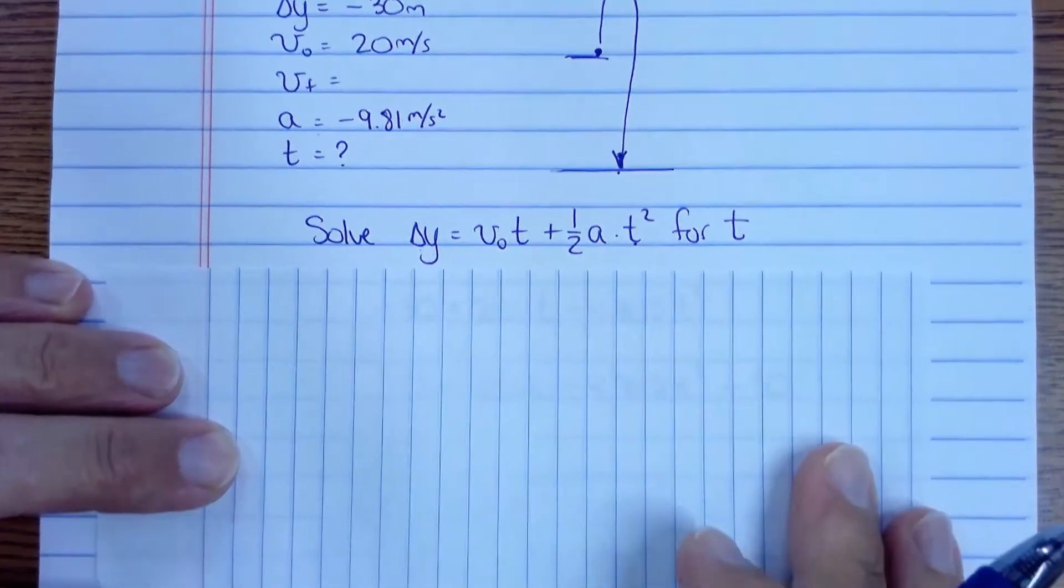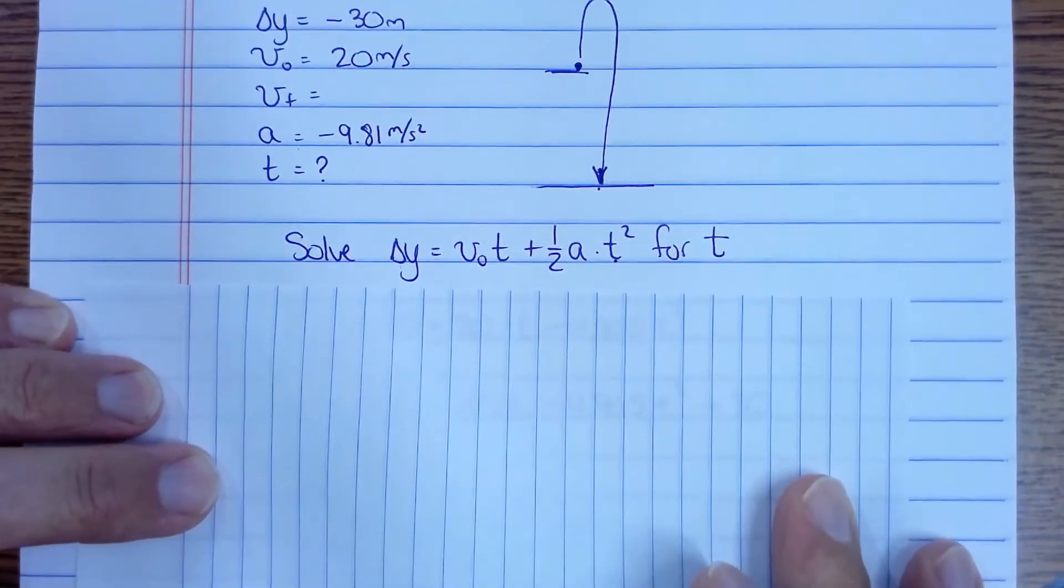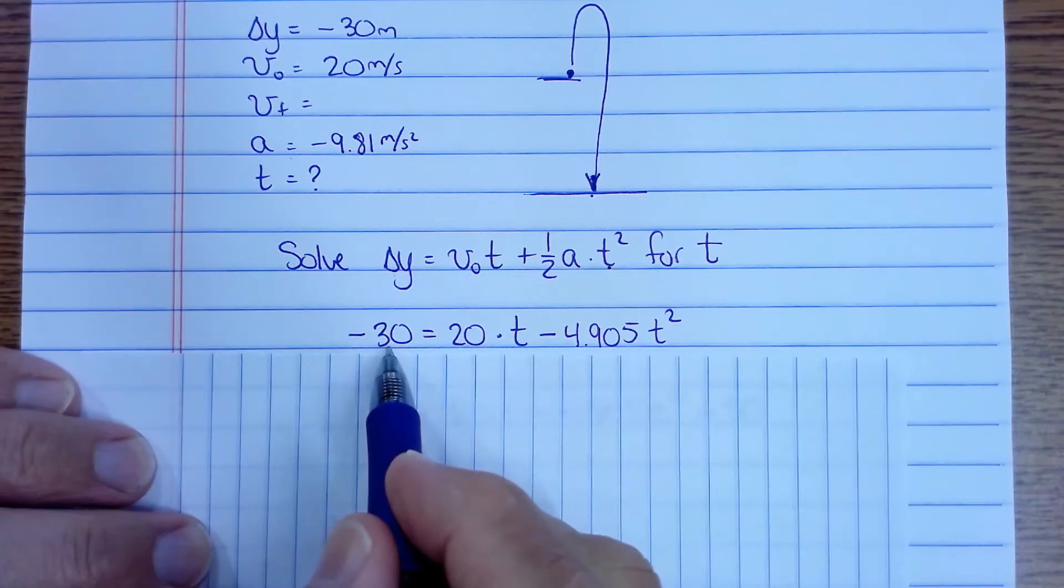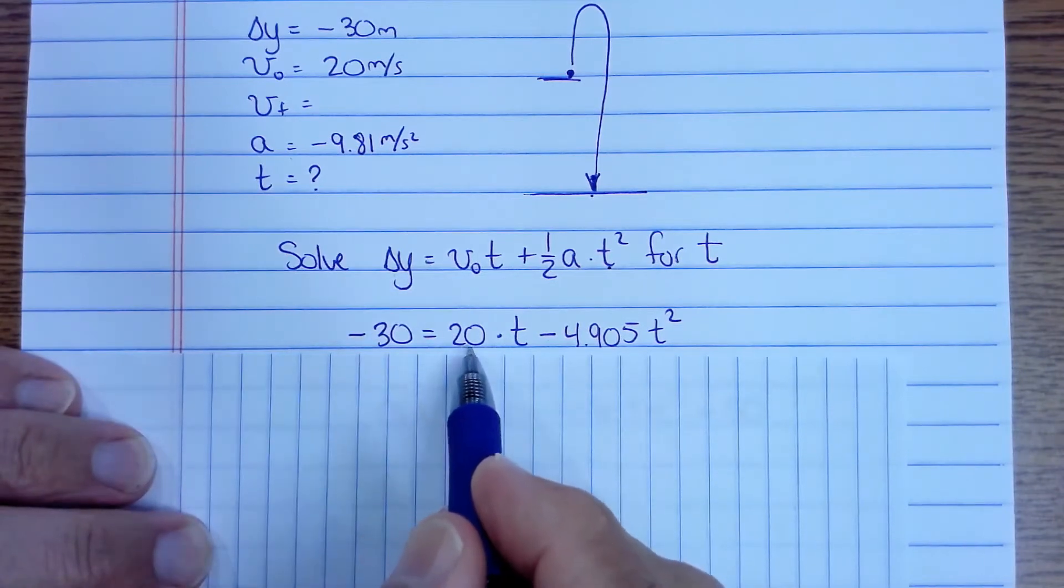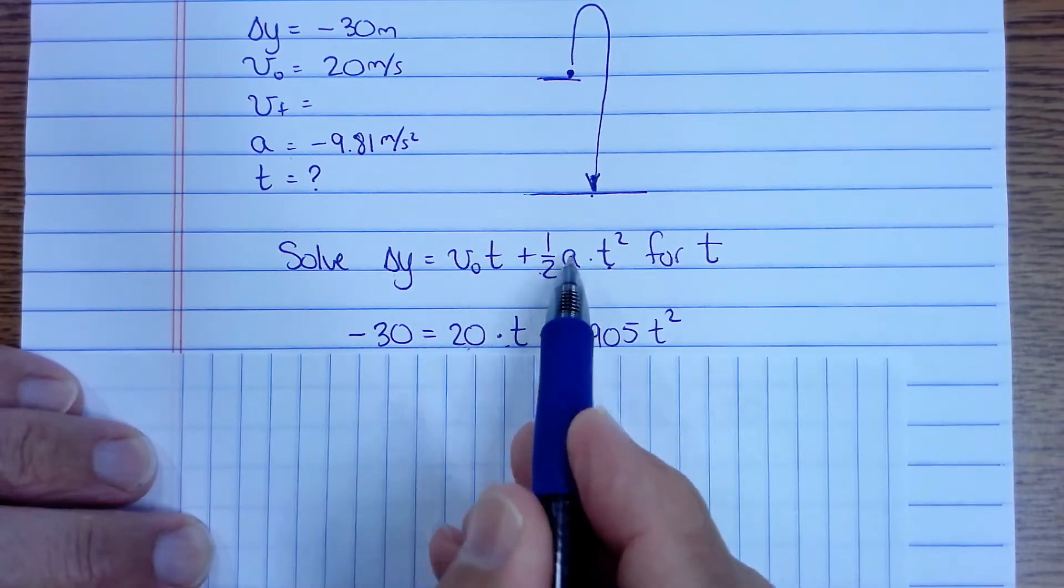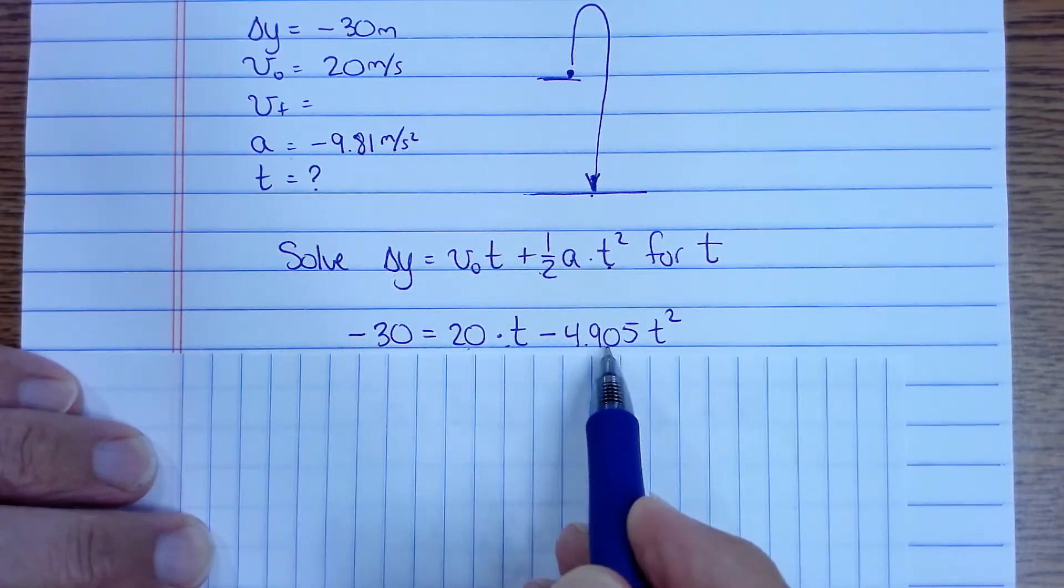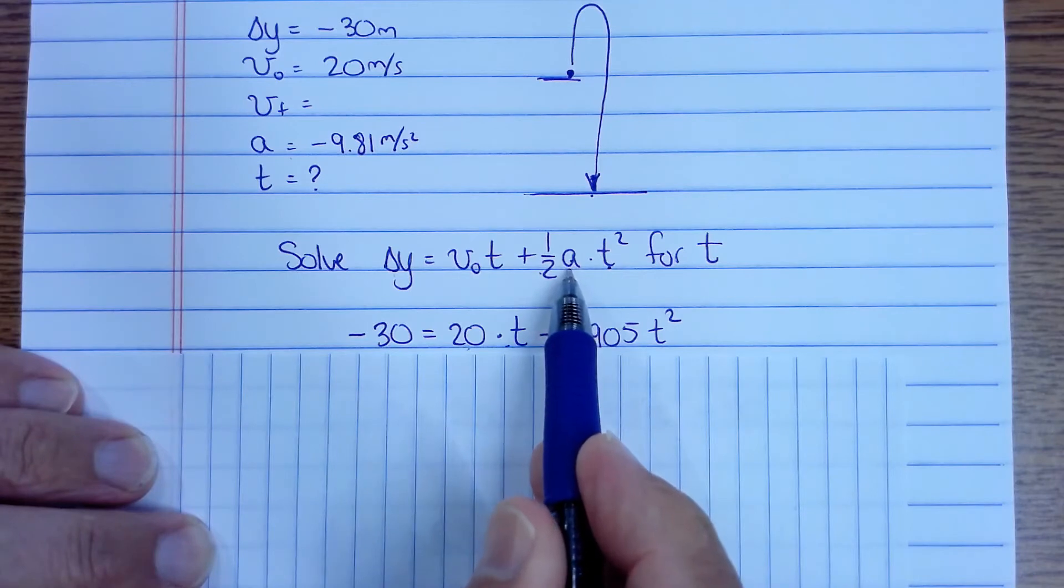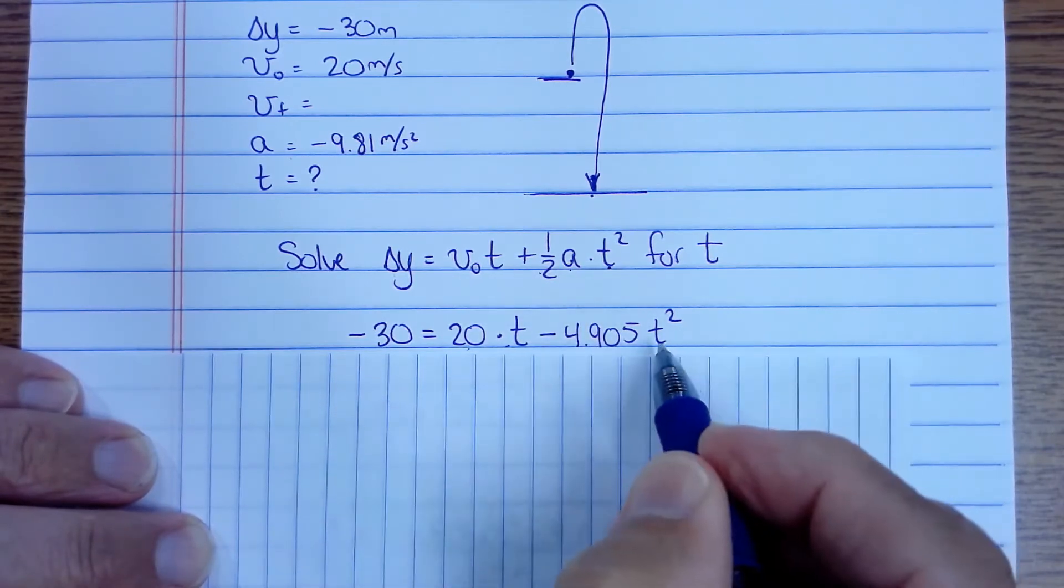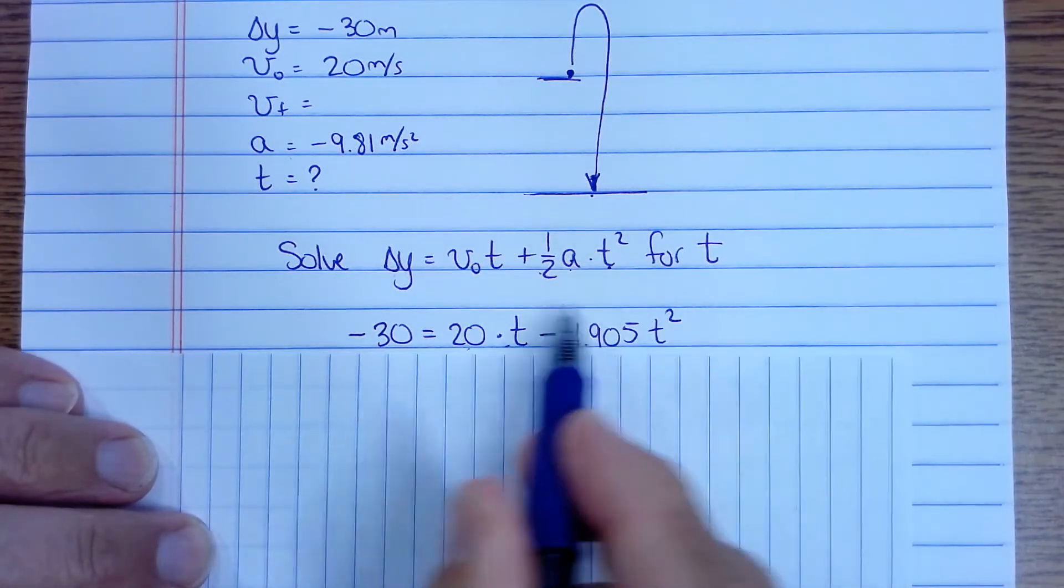So what that means is I'm going to write out what this is with my variables. So delta y is negative 30 equals the initial velocity, so that's 20 times t. One half of the acceleration is negative 4.905. So the acceleration of course is negative 9.8 and half of that is 4.905. That's times t squared. So this is the equation we're solving.